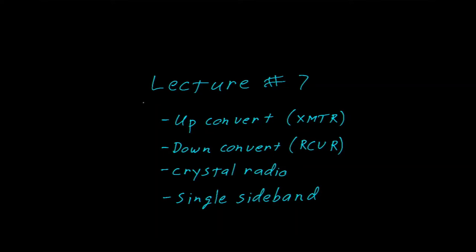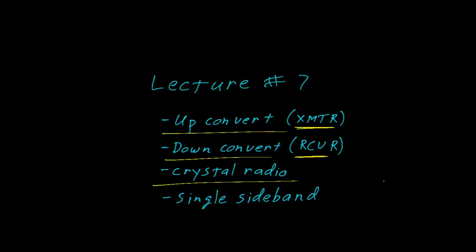This is a continuation of our discussion of amplitude modulation. We're going to explore the concept a little bit differently than before. We're going to talk about up converting, which happens at the transmitter, and down converting frequencies, which happens at the receiver. We'll briefly look at the crystal radio, specifically the diode detector, and from there we'll move on to single sideband.